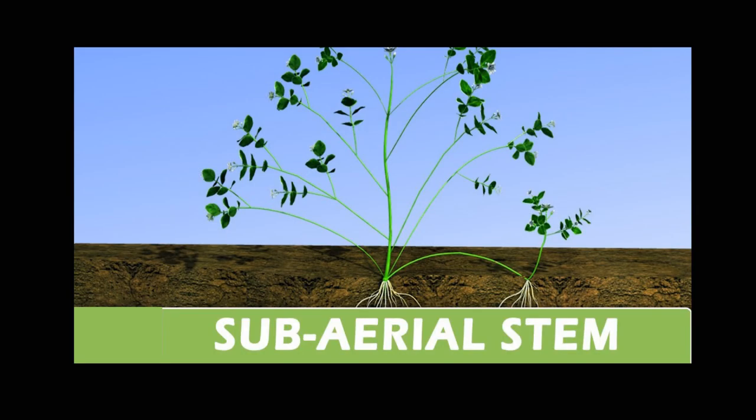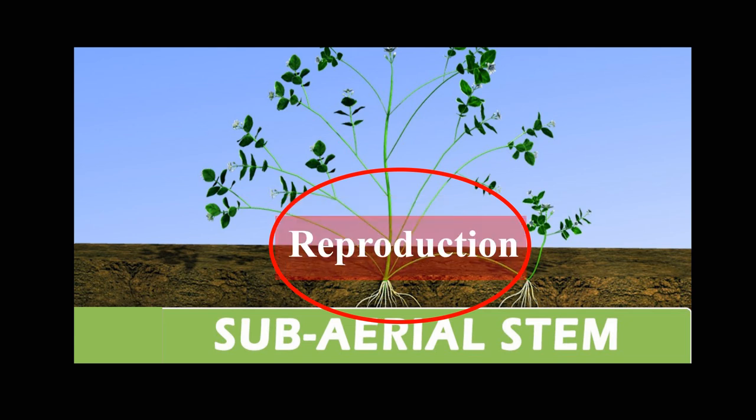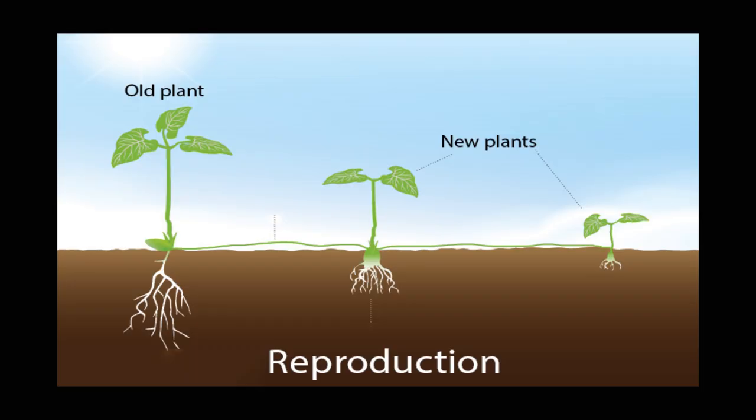Stems of some plants remain sub-aerial, which grow horizontally on the surface of the soil. These stems not only act as transporters of nutrients, water, and food, but also get modified to perform reproduction. Reproduction is the process by which new plants are grown. In this video, we will learn about different types of such stems. There are four types of sub-aerial stems which are modified to perform reproduction.